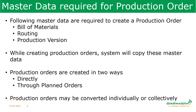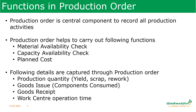We can individually or collectively convert planned orders from MRP into production orders, or create a production order with or without reference to any planned order. A production order is also a central component used to record and update all activities. We can ask the system to check material availability or capacity availability, and set the system to calculate planned costs and many other activities.